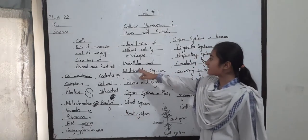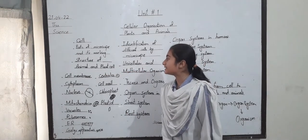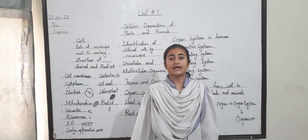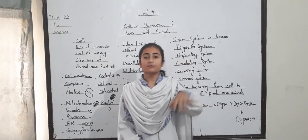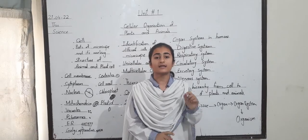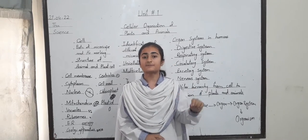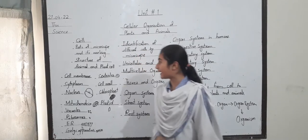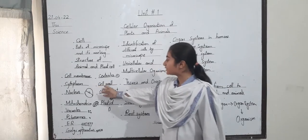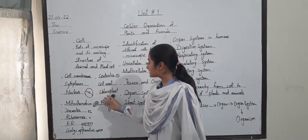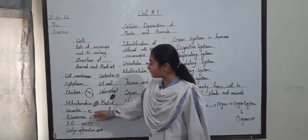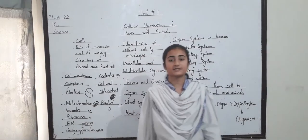Next I discuss about the structure of animal and plant cells. Animal cells and plant cells have parts in the middle which we call cell organelles, and each organelle performs different functions. These include cell membrane, centrioles, cytoplasm, cell wall, nucleus, chloroplast, mitochondria, plastids, vacuoles, ribosomes, etc.